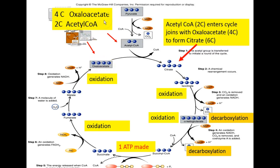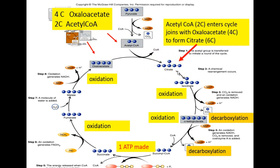In the TCA, a four-carbon compound called oxaloacetate joins the product of the transition step, acetyl coenzyme A, which was created by decarboxylating and oxidizing three-carbon pyruvate. Acetyl coenzyme A is a two-carbon compound; oxaloacetate is a four-carbon compound. When both come together, a six-carbon compound, citrate, is formed.